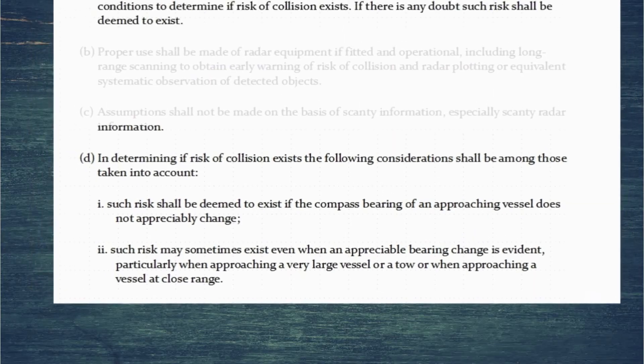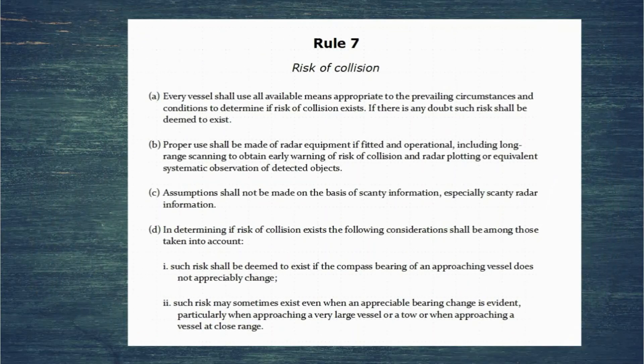And that brings us to the end of Rule 7. We've seen how we determine if risk of collision exists. We've seen the importance of systematic observation. We've seen that you cannot make assumptions. And we've seen that if the compass bearing of an approaching vessel doesn't change, risk of collision exists. But we've also seen that in some cases, even if the bearing is changing, risk of collision may still exist.